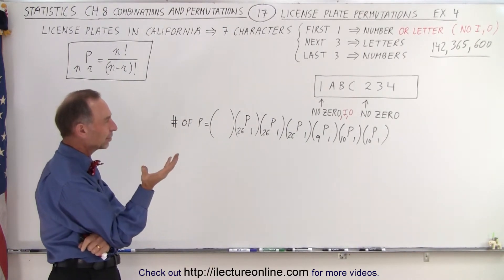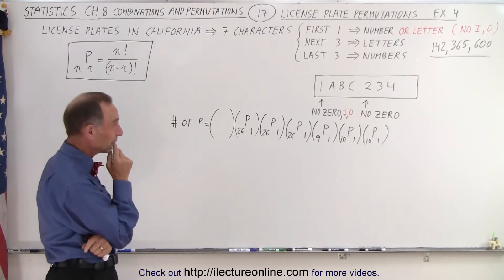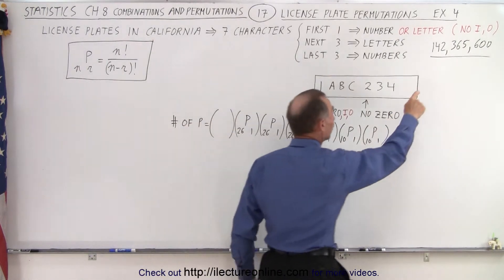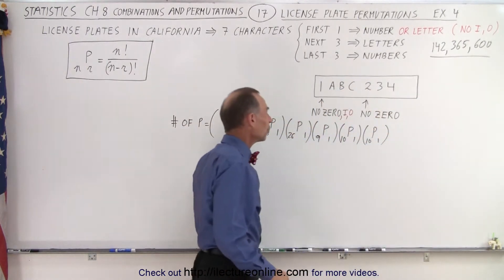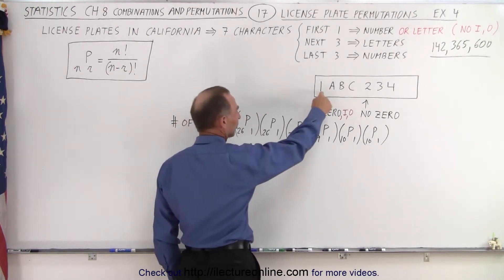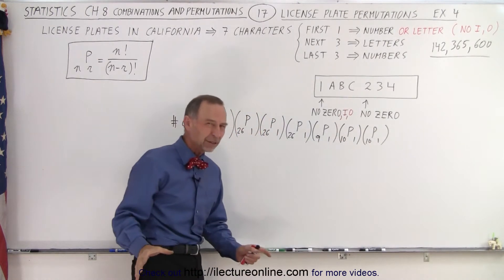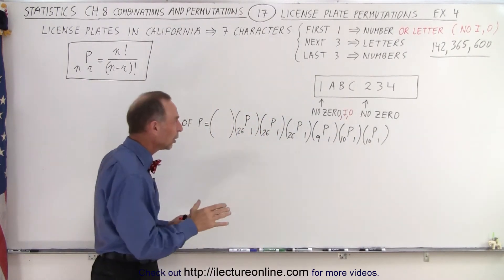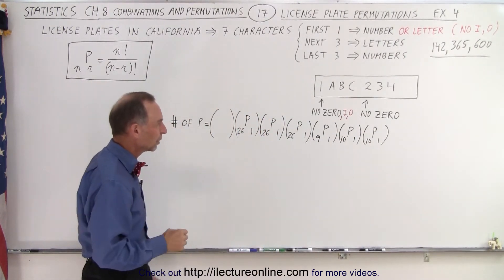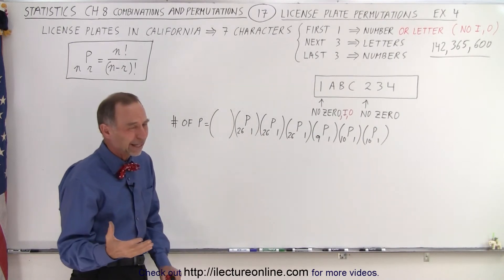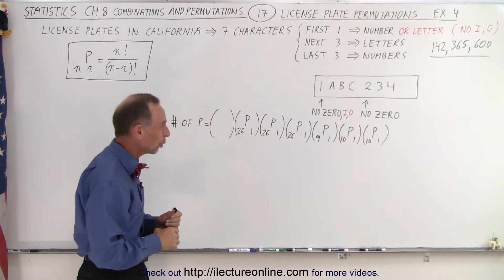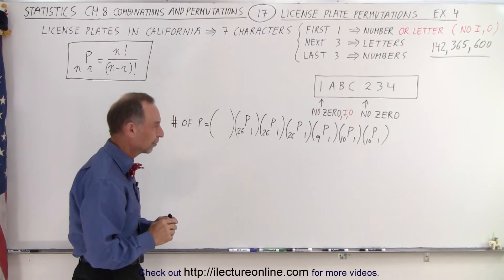Now, we ran out of combinations, or again, permutations, even though we had over 140 million of them, so we decided to let the first character also be a letter. But it would make sense that an I or an O would not be allowed, because that would be too confusing with a one or a zero. Well, a zero wasn't allowed anyway, so we just don't want an O or a zero there, so it makes more sense.